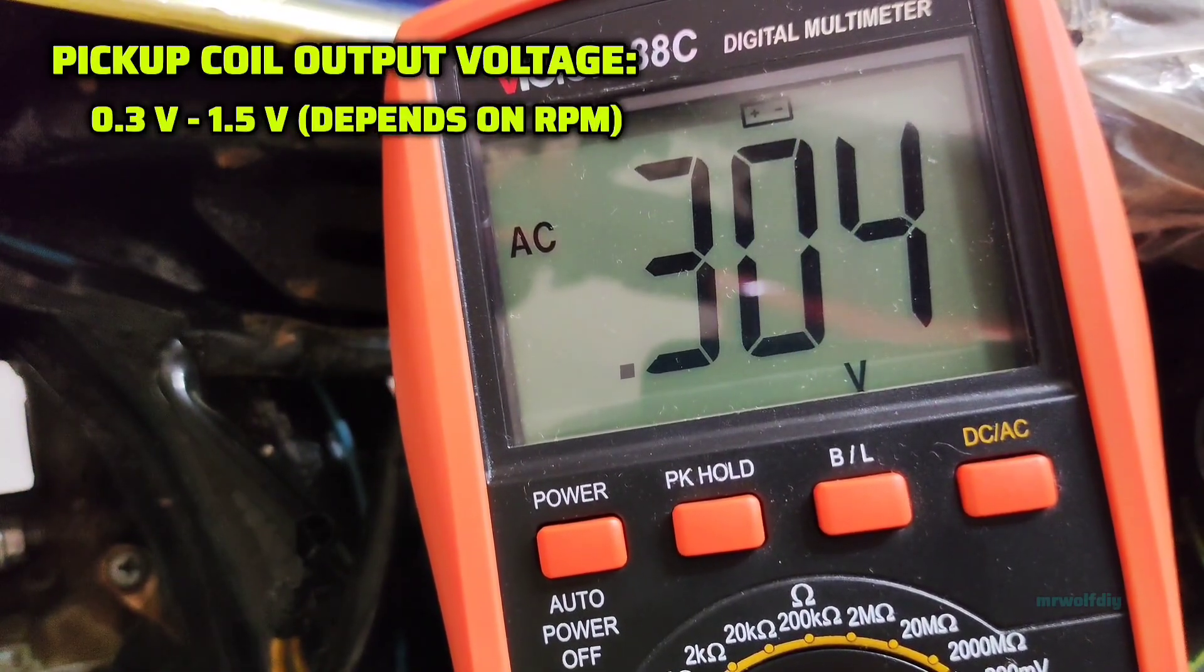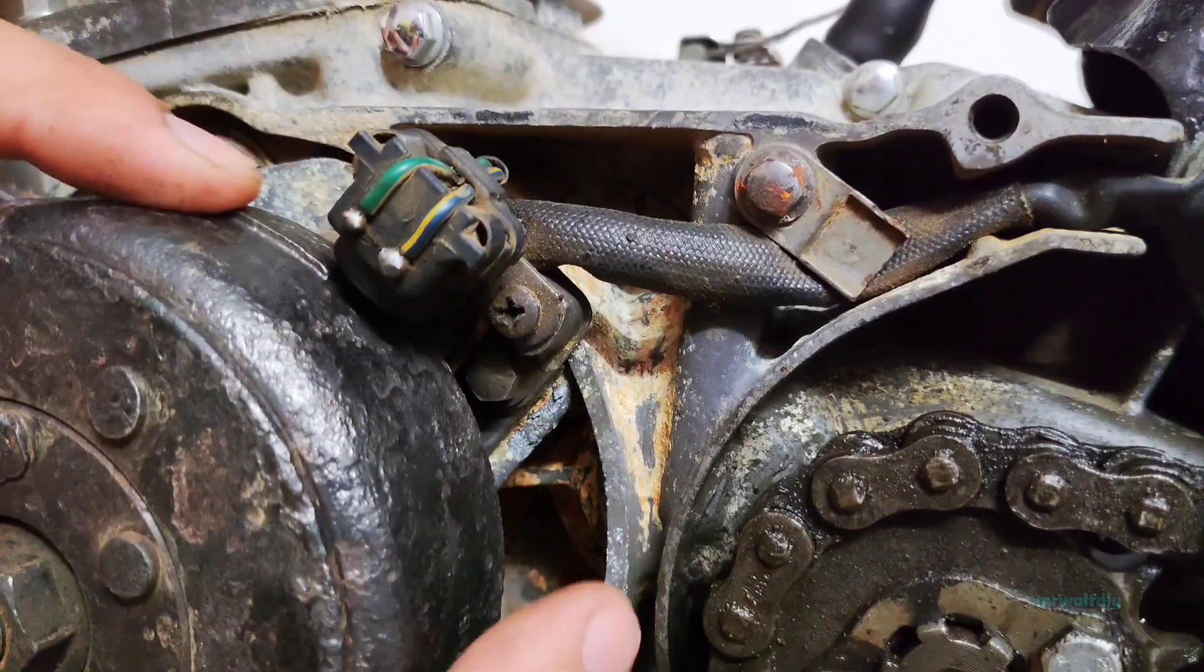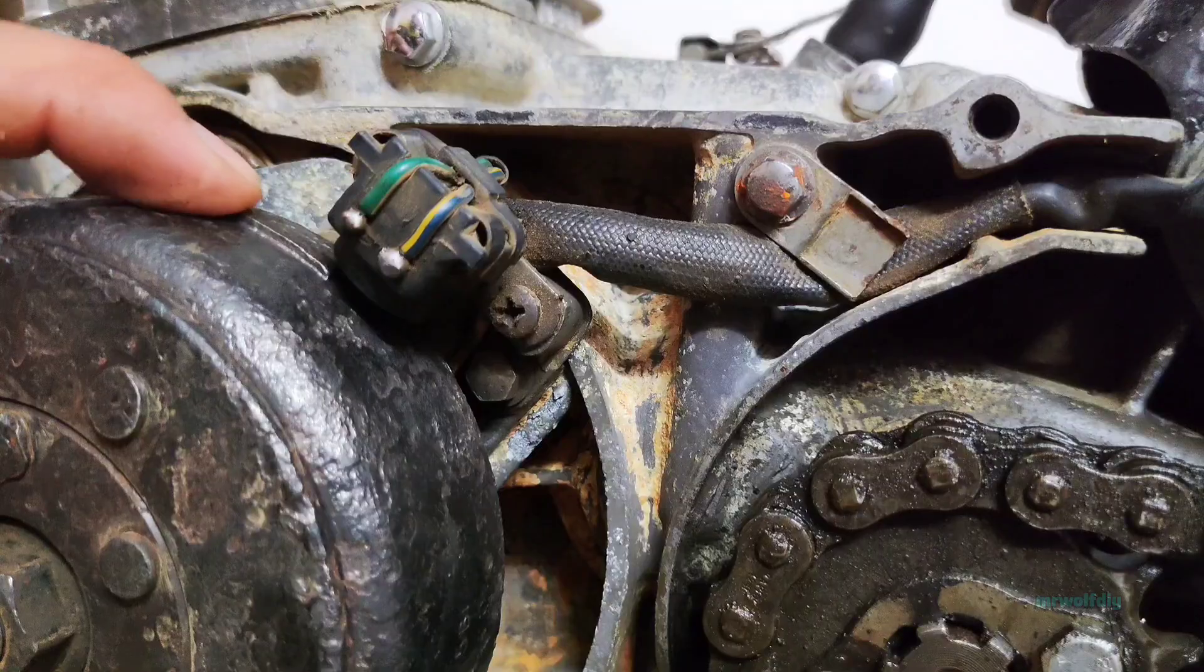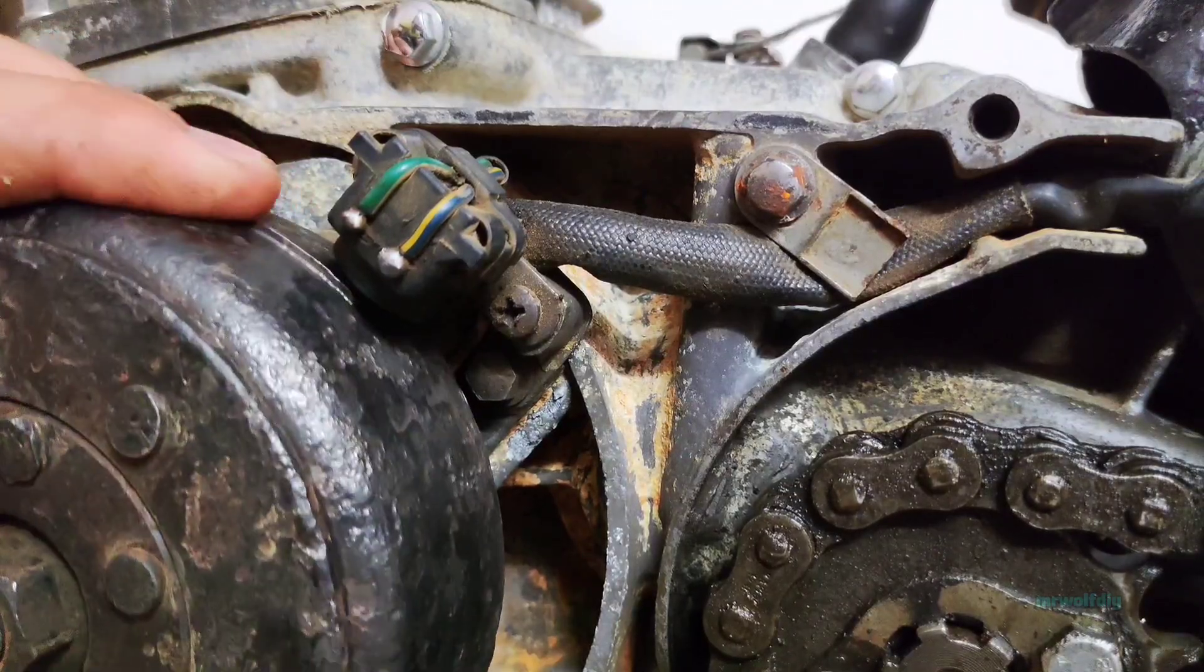You should see a voltage generated by pickup between 0.3 and 1.5 volts depending on the RPM of engines. If you only get voltage at high RPM, the gap between pickup and flywheel is too large.